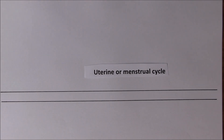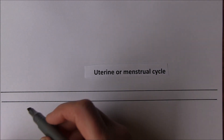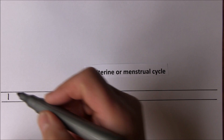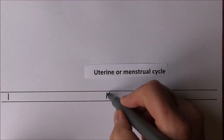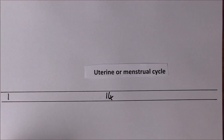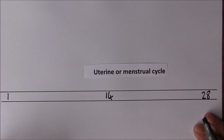We're talking about the uterine or menstrual cycle, which is fundamental to human reproduction. An idealized cycle starts on day one, the middle part is day 14, and the end part is day 28. So that will be an idealized cycle.